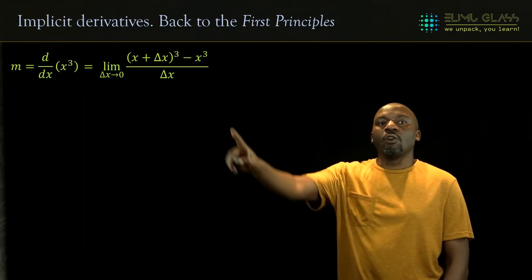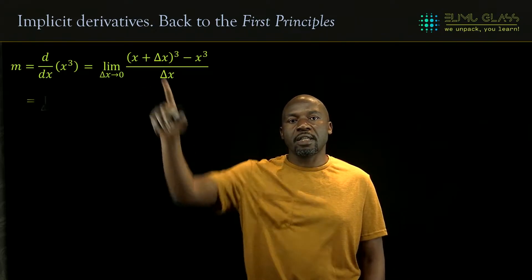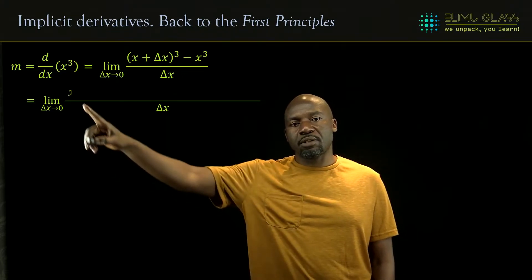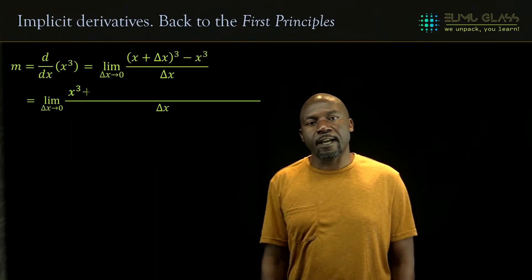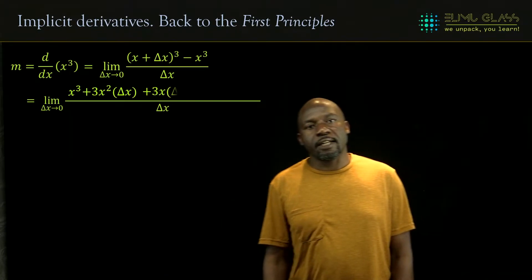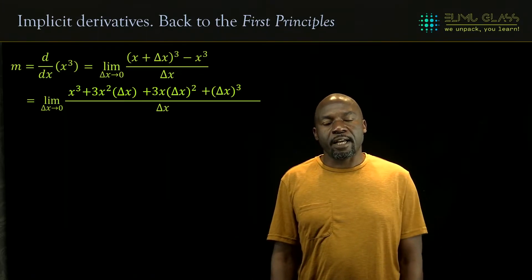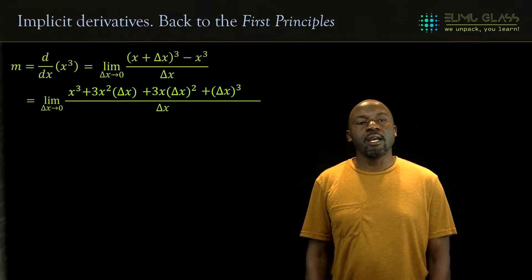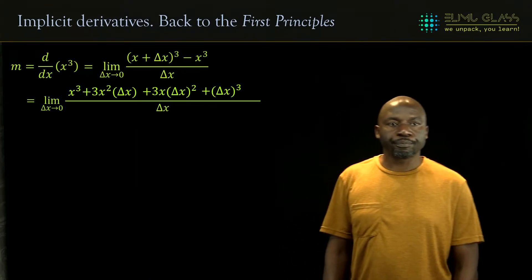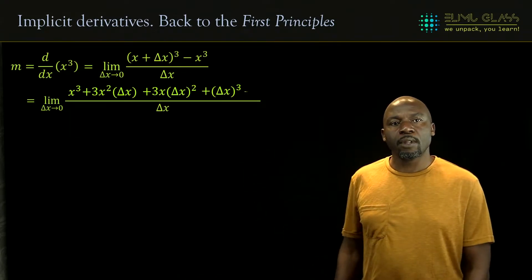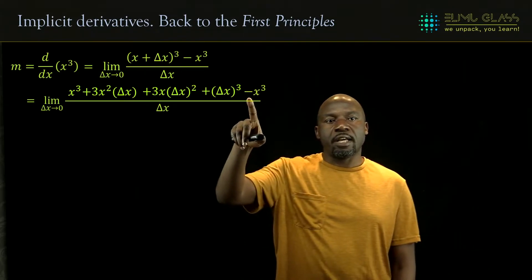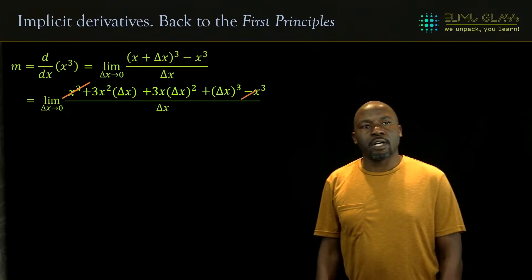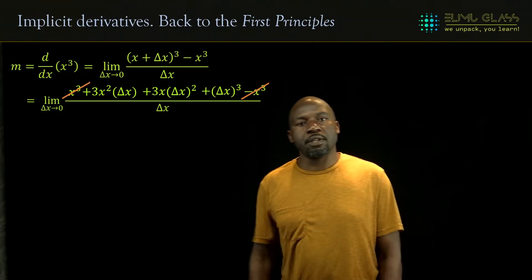All we need to do is open the bracket. Since it's a power of 3, we expect four terms: the first being x cubed, the next being 3x squared delta x, the third being 3x delta x squared, and the fourth being delta x cubed. You can use Pascal's triangle if needed, but generally an HL student should be fine. We then subtract the x cubed, and the positive x cubed and negative x cubed cancel each other, leaving three terms in the middle.